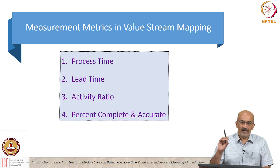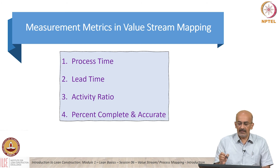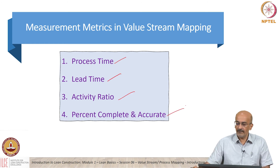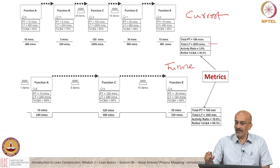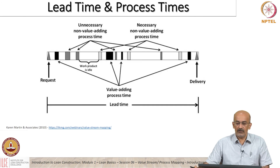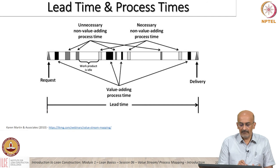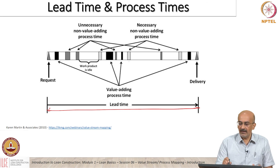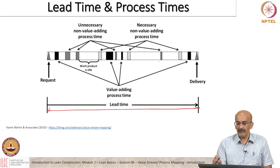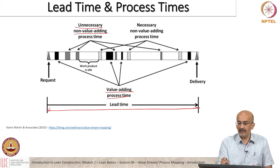Now we discuss the metrics. All of you have an idea of what the metrics are, but let us go through formal definitions. The metrics we looked at are: process time, lead time, activity ratio, and percentage complete and accurate. We went through these calculations previously. Looking at a graphic to represent this: the lead time is the total timeline shown, and the process time is the sum of the shaded areas. The process time can have value-adding parts and non-value-adding parts — both unnecessary non-value-added and necessary non-value-added.